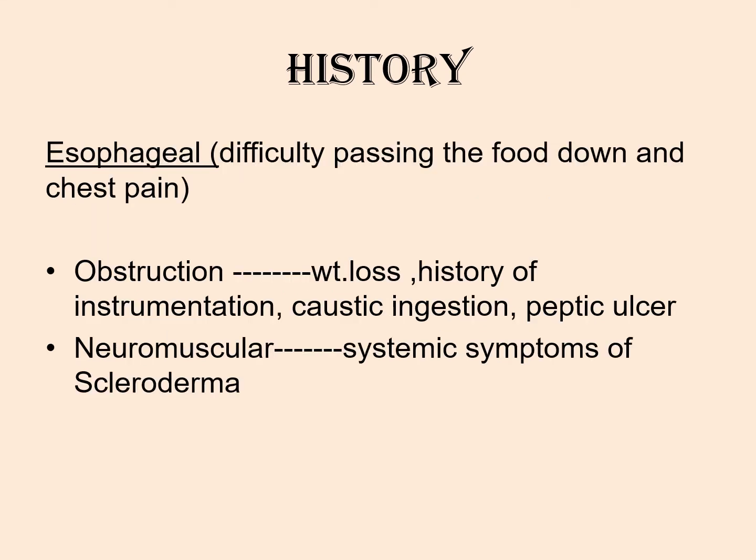In esophageal problems, there would be difficulty passing food down and there would also be chest pain. If obstruction is the cause, there would be a history of weight loss, history of instrumentation or caustic ingestion, or peptic ulcer. In neuromuscular causes, there would be systemic symptoms of scleroderma.